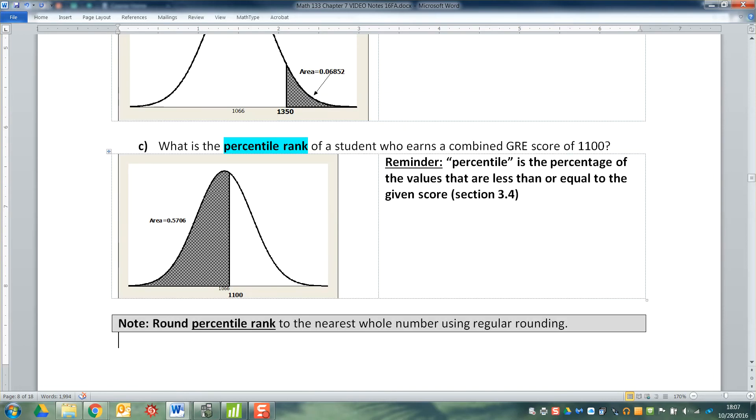Now if you score 1100, you're higher than the mean, but not by much. You're just a tiny bit above the mean. So you should put your vertical line just a little bit to the right of the center. And you can tell that I think that this area is 0.5706, but I'm going to prove it to you.